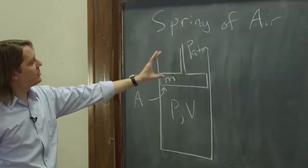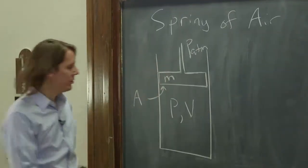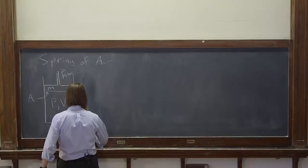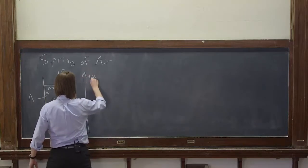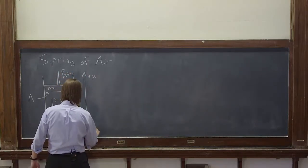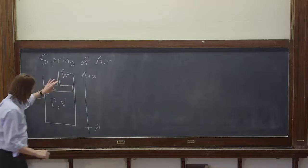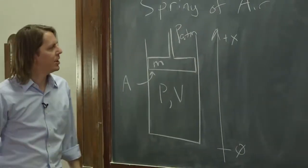Now we want to think about the equation of motion of this mass. Let's set up our coordinate system with the x-axis positive going up, and we'll put the origin at the point when the mass hits the bottom of the chamber.